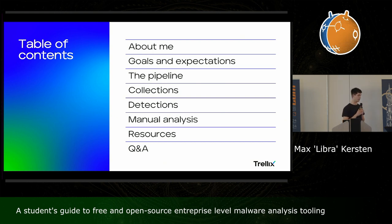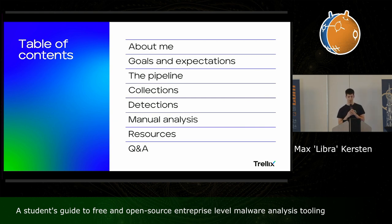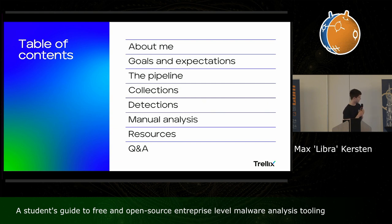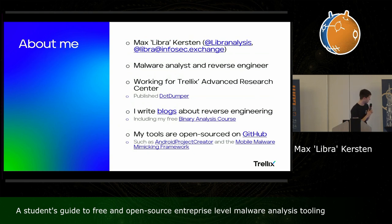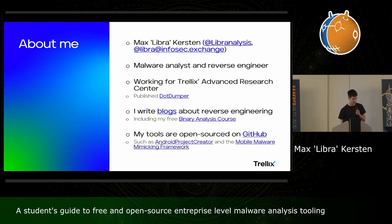Table of contents: first a brief slide about me, then some goals and expectations — the title can raise various questions but not all of them are what I set out to answer. Then I want to talk about the pipeline itself: collections, detections, manual analysis, and some resources including some shameless self-promotion, and some time for Q&A. My name is Max Kirstegel, nickname Libra. You can reach out to me on any of these handles. I work for Tralex on the advanced research team and we do malware analysis.